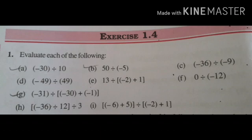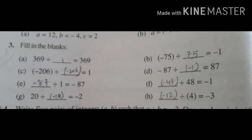So in this way we solve all these questions — just follow the rule and you can do it very easily. Question number 3, Fill in the Blanks — very easy, dear students. First one: 369 divided by dash equals 369. What number do we divide 369 by to get the same answer? Obviously the number is 1, because dividing or multiplying any number by 1 gives the same answer.